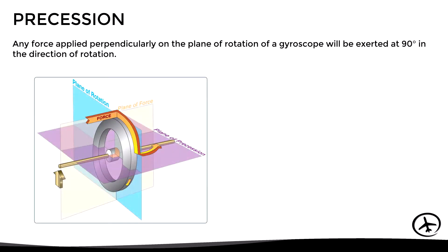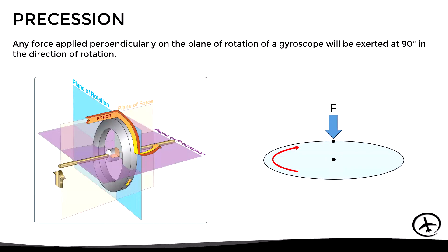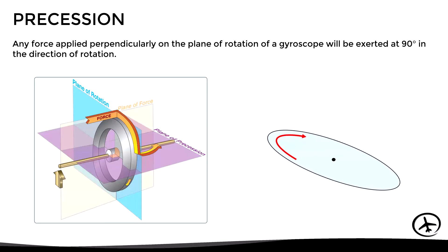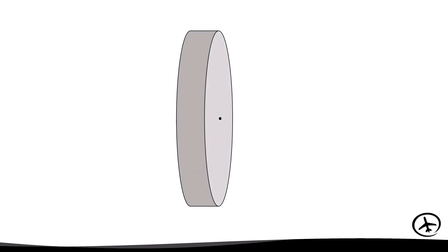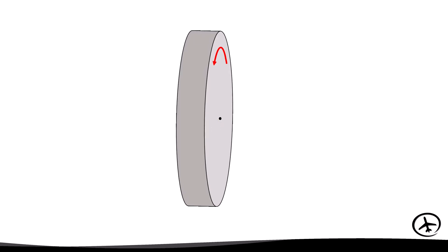Precession establishes that any force applied perpendicularly on the plane of rotation of a gyro will be exerted at 90 degrees in the direction of rotation. For example, with a rotating disc representing the gyro, if we apply a force at one point, that force will actually be exerted 90 degrees in the direction of rotation, at another point, causing the disc to tilt. Similarly, for a gyro with its axis of rotation positioned horizontally, a force applied at one point will, due to precession, be applied 90 degrees in the direction of rotation, causing the gyro to tilt.